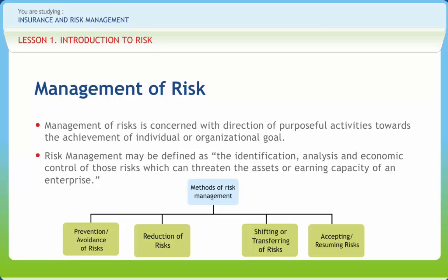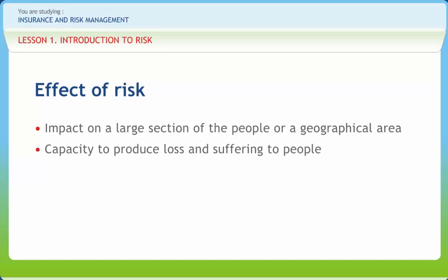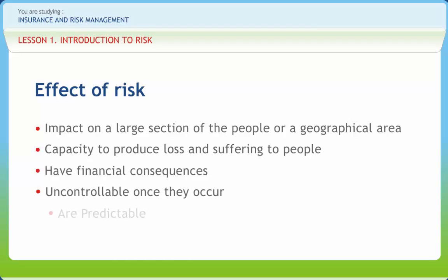Leaving behind the dynamic and speculative risk, which may bring gains to persons, the other risks classified as pure, static, fundamental and particular. The effects of risk are that it impacts a large section of the people or a geographical area. It has capacity to produce loss and suffering to people. They are uncontrollable, have financial consequences. Uncontrollable once they occur, are predictable and no possibility of any gain. The exposure of a person is transferred to a group, which is facing such homogeneous risk.